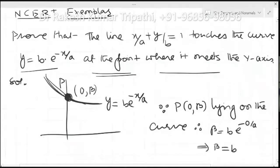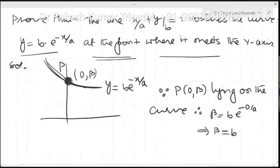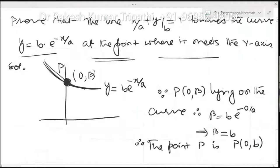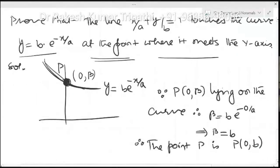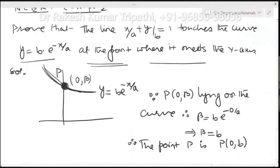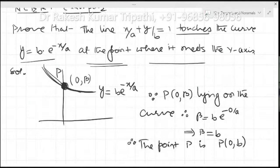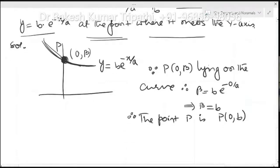Therefore the point P is (0, b). We are supposed to find the equation of the tangent at this point, because the question asks that the line touches the curve — meaning it is a tangent. So the question is to find the tangent to the curve at this point. We have obtained this point (0, b).